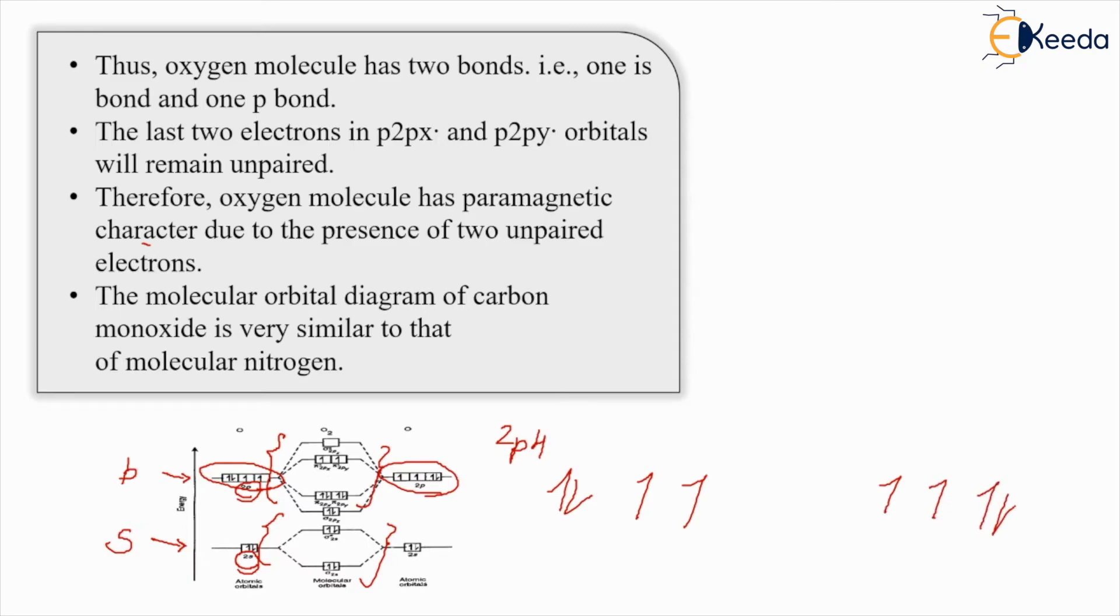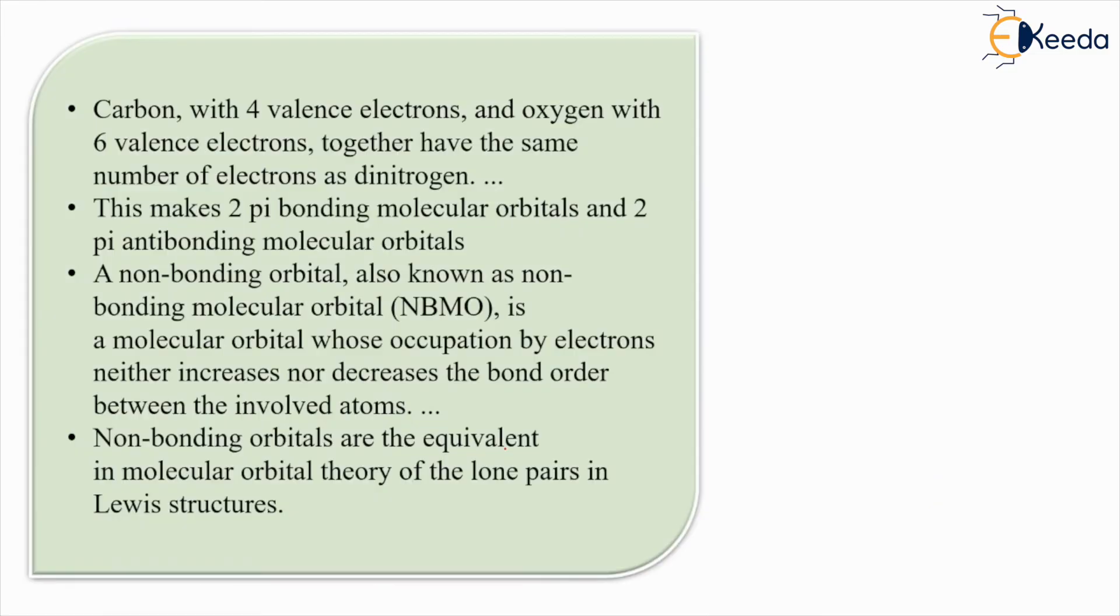The last two electrons in 2ppx and 2ppy orbitals will remain unpaired. Therefore, oxygen molecule has paramagnetic character due to the presence of the two unpaired electrons. The molecular orbital diagram of carbon monoxide is very similar to that of molecular nitrogen.